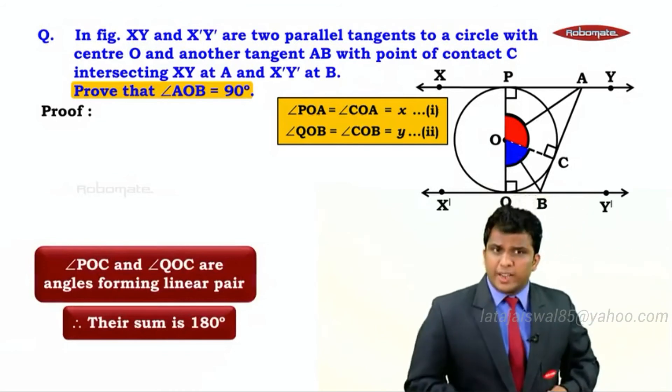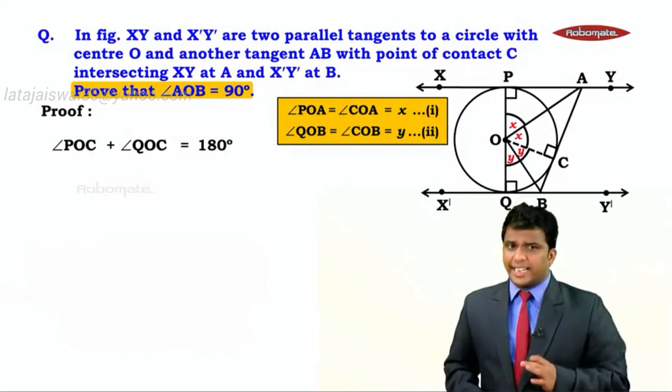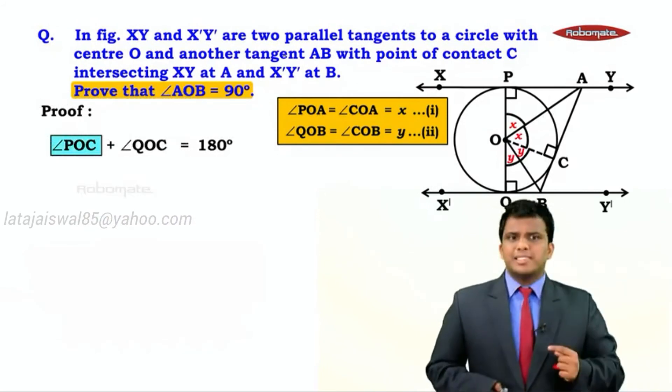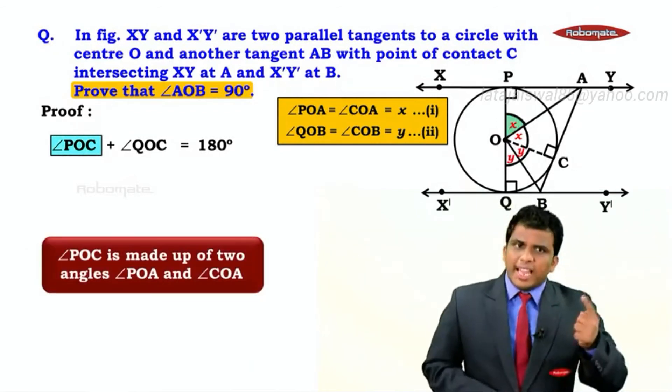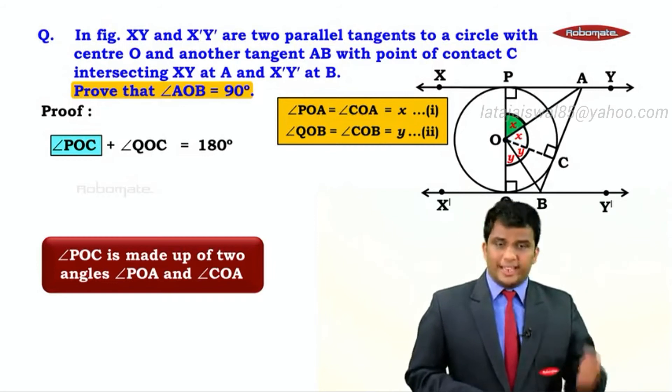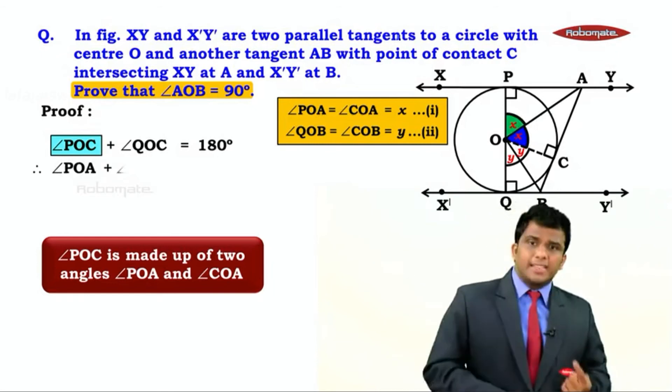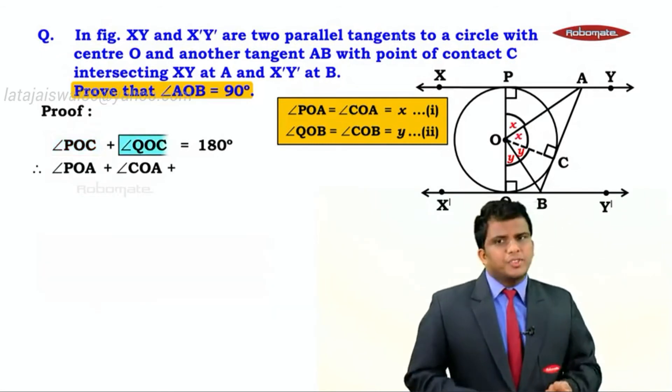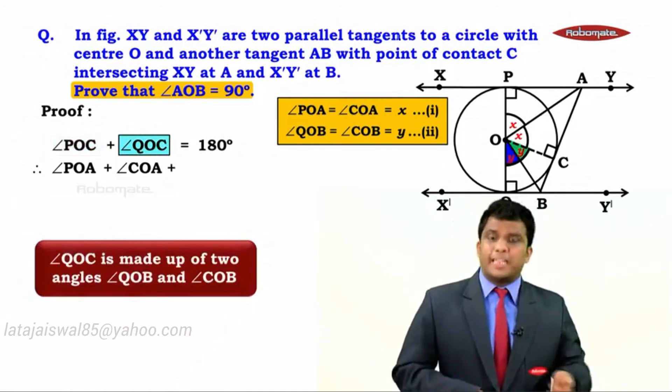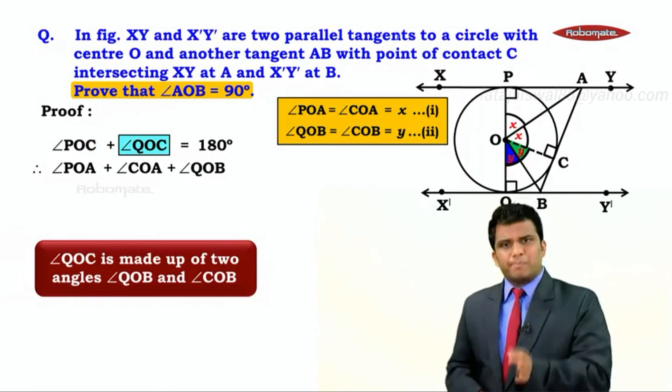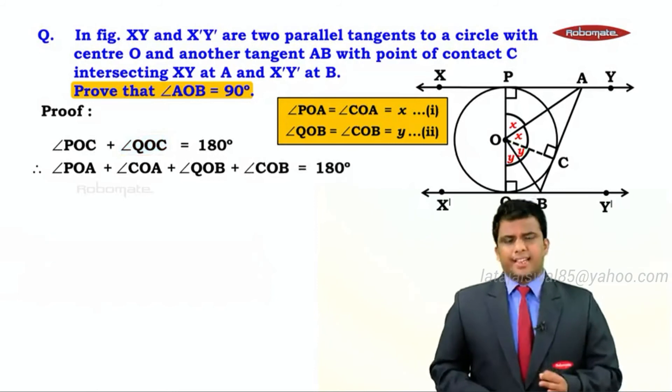If they form a linear pair, the sum equals 180. Hence angle POC plus angle QOC equals 180 degrees. Angle POC is formed by adding two adjacent angles: angle POA and angle COA. So we substitute angle POC as angle POA plus angle COA. Angle QOC is made up of angle QOB and angle COB. That means angle QOC will be replaced as angle QOB plus angle COB, and the sum equals 180. The reason is angle addition property.